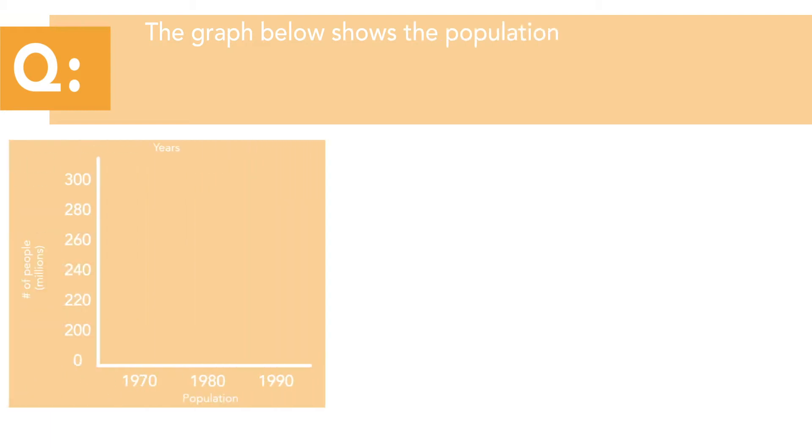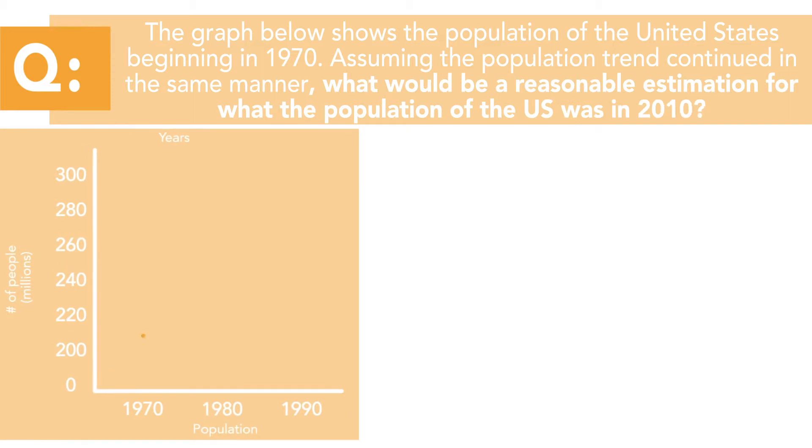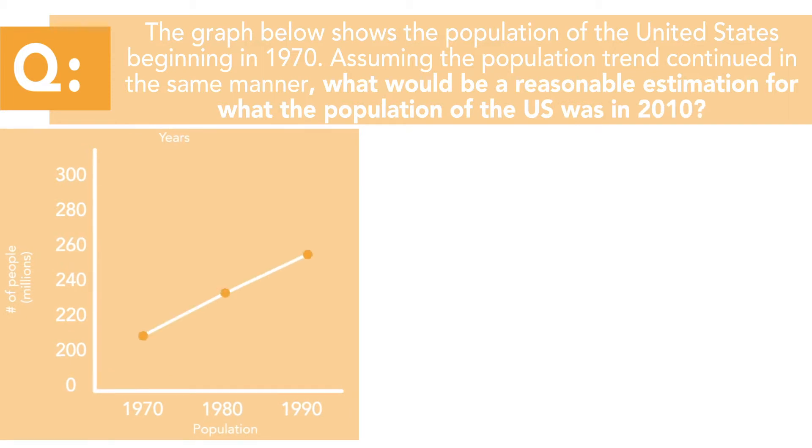Now, the graph on the screen shows the approximate population of the United States beginning in 1970. Assuming the population trend continued in the same manner, what would be a reasonable estimation for what the population of the United States was in 2010?